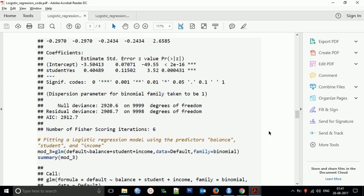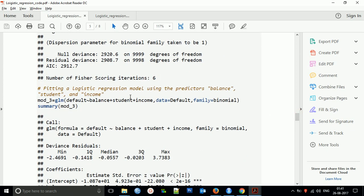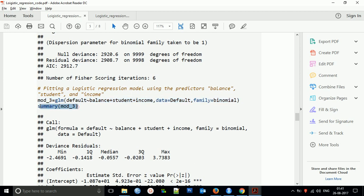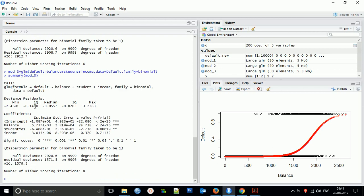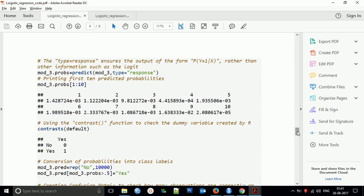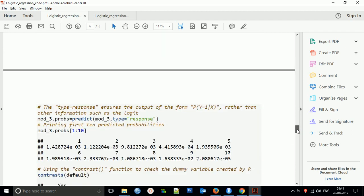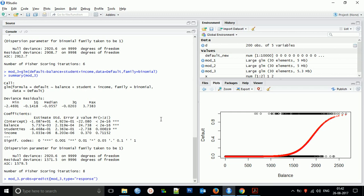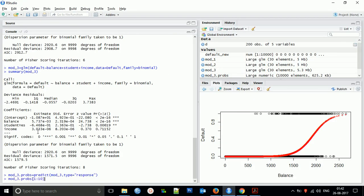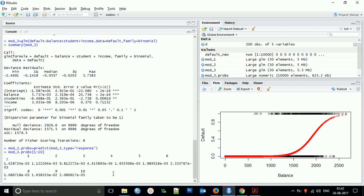Now fitting a logistic regression model using predictor balance. I'll call that function. You can calculate the probability using the type equals response argument to output probabilities rather than log odds. If you want to print the first predicted probabilities, use that function. These are the predicted probabilities.